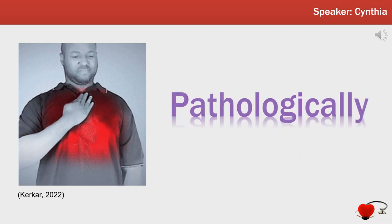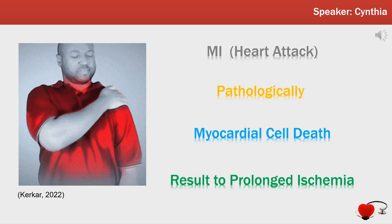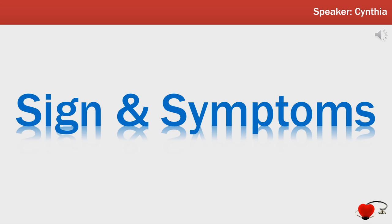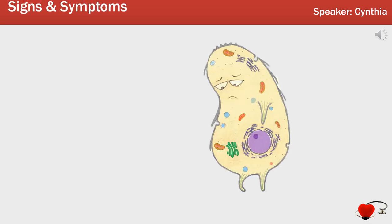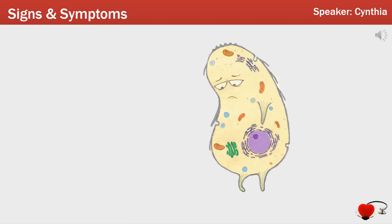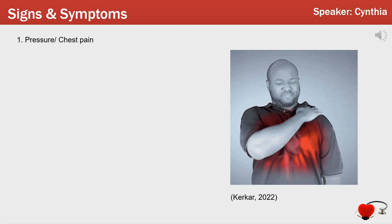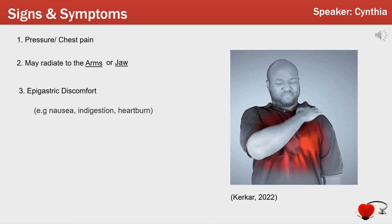MI is defined pathologically as myocardial cell death due to prolonged ischemia. The onset of myocardial ischemia results from an imbalance between oxygen supply and demand. This can present as pressure, tightness, or chest pain that may radiate to the upper extremities, most commonly on the left side. The pain may also radiate up the neck and jaw. Presence of epigastric discomfort, including pain, nausea, indigestion, or heartburn during exertion or at rest, as well as overwhelming dyspnea or fatigue, are also common signs.